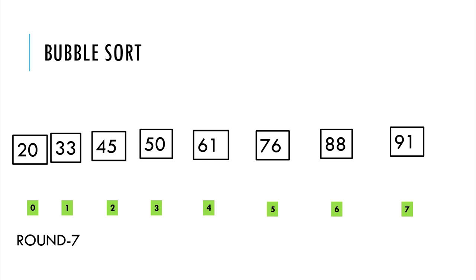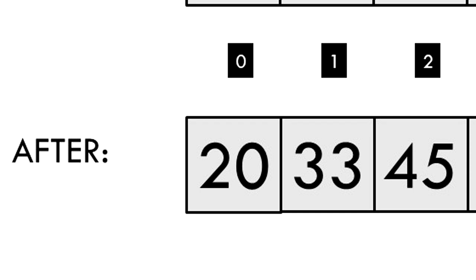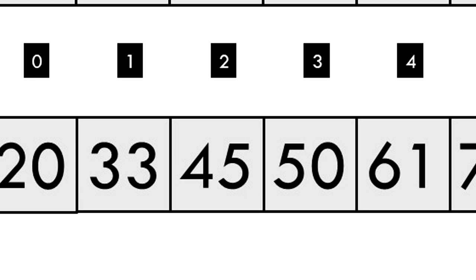What we get is a sorted array. Index 0 will have the smallest number, 20. Index 1 will have the next highest, 33. Index 2 will have 45. And so on.